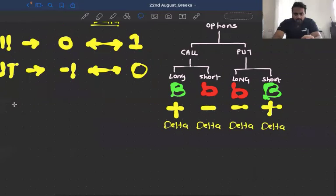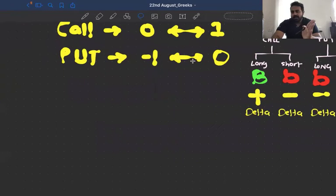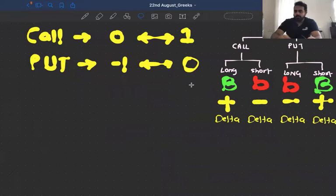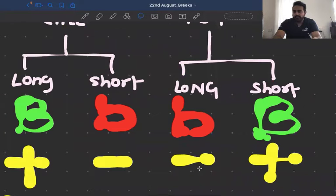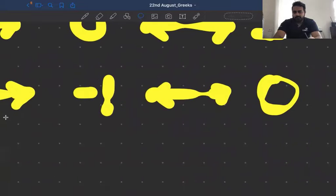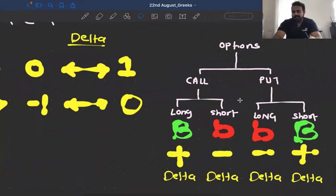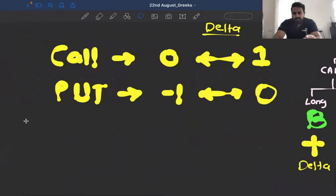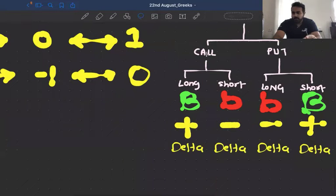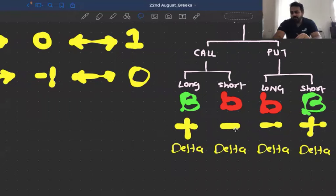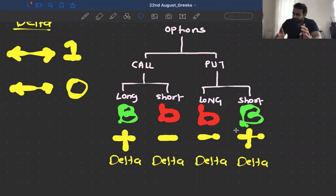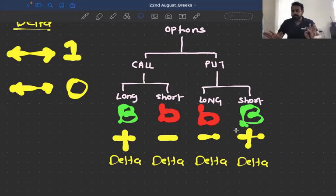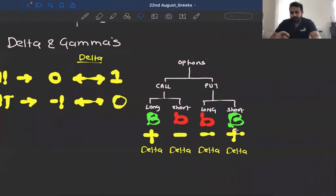A put option is supposed to have a negative delta, between minus 1 and 0. So if you buy a put option — buying means long put — you have a negative delta. But if you are selling a put option, your delta becomes positive. A call option is supposed to have a positive delta. So when you are buying a call option, you have positive delta. But when you sell a call option, it becomes negative. Remember BBBB: bullish, bearish, bearish, bullish. The first and last are positive delta, the two in the center are negative delta.